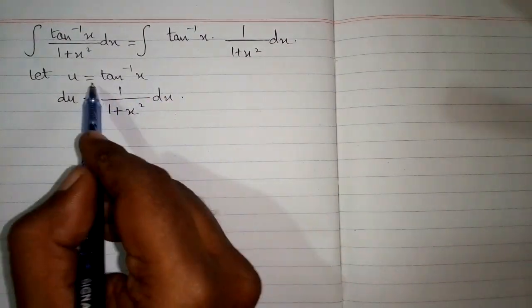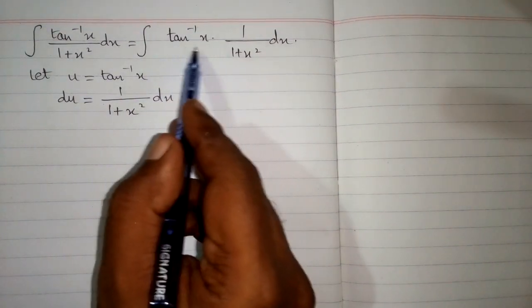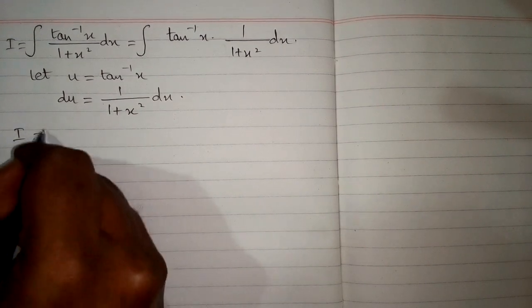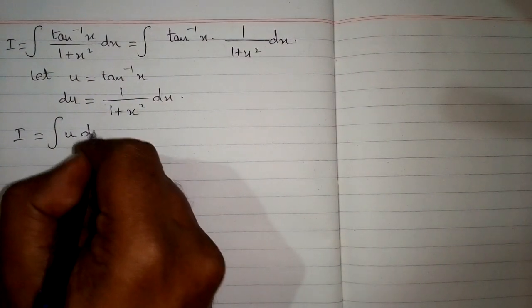Now we can substitute u in place of tan⁻¹(x) and du in place of 1 over 1 plus x squared dx. If we call the integral I, then I equals the integral of u du.